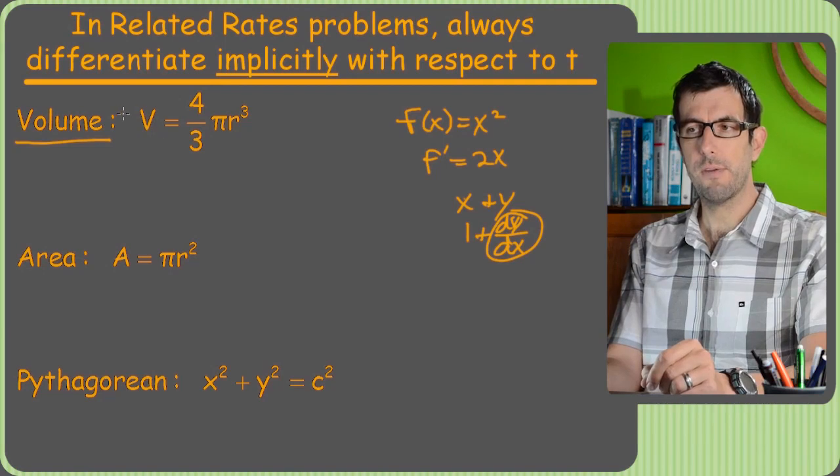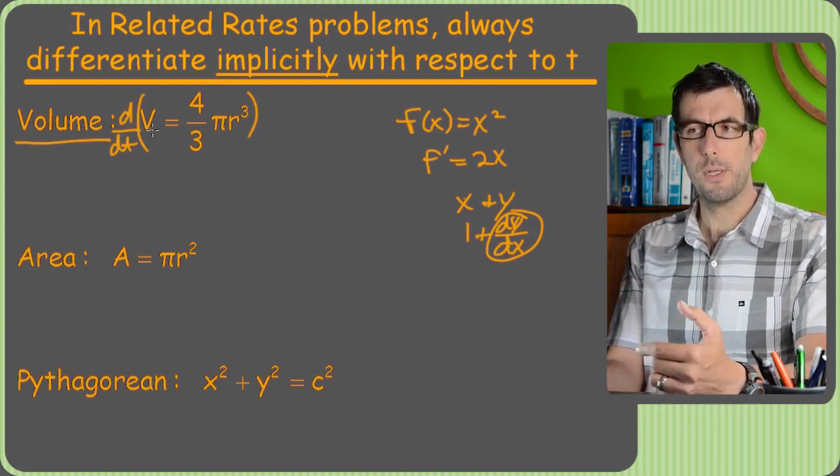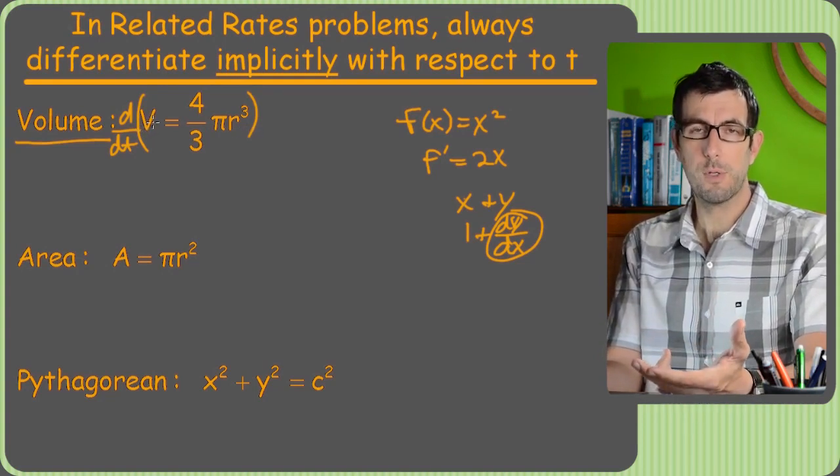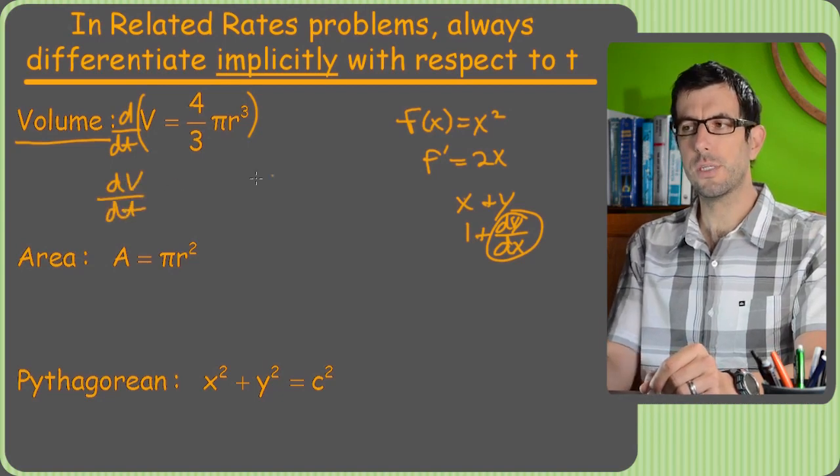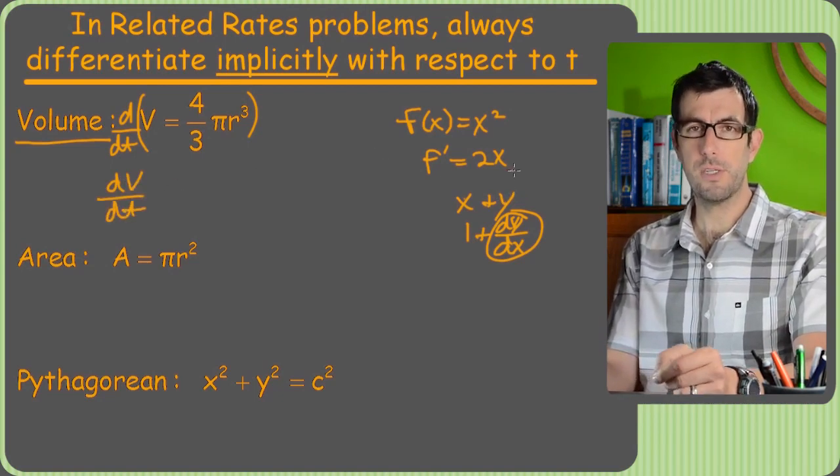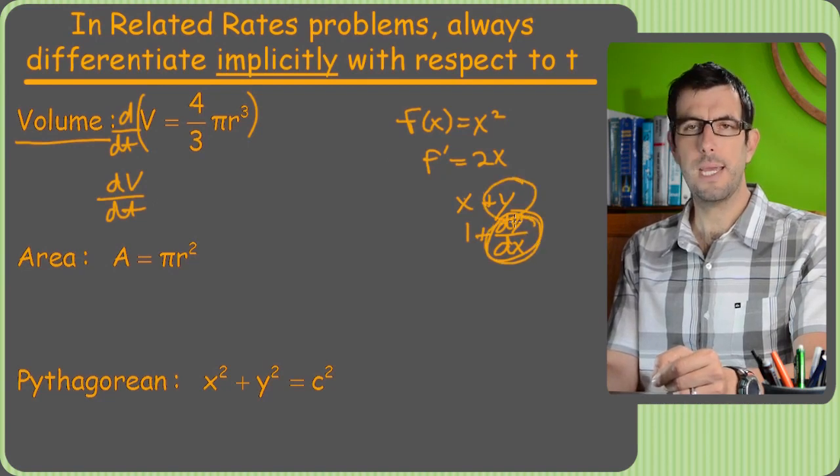So if we take the derivative with respect to t of this entire equation, we'll just do it one term at a time. Derivative of volume, or V, with respect to t is just dV/dt. It's just like in implicit differentiation. When we took the derivative of y, we got a dy/dx.